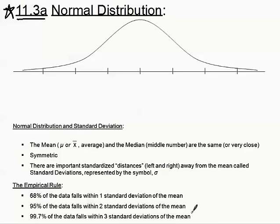Not every set of data is going to follow a normal distribution curve. For example, the quizzes that we just took might be more heavily A's and B's, and not as many C's, D's, and F's. So that wouldn't be normally distributed. But when we are talking about a normal distribution, you'll see those words in the problem.